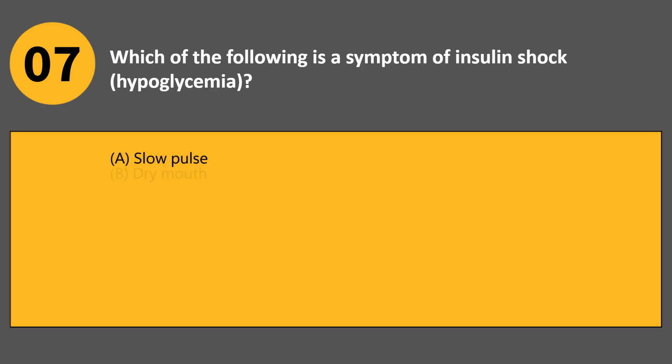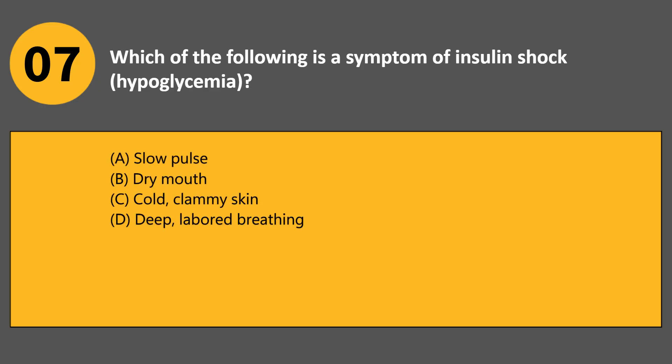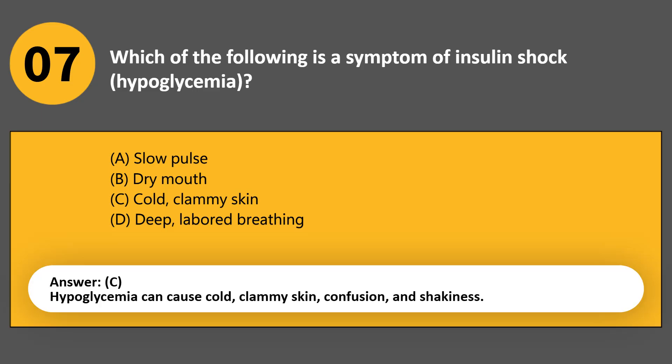Which of the following is a symptom of insulin shock (hypoglycemia)? A. Slow pulse. B. Dry mouth. C. Cold, clammy skin. D. Deep, labored breathing. Answer C. Hypoglycemia can cause cold, clammy skin, confusion, and shakiness.